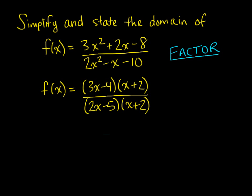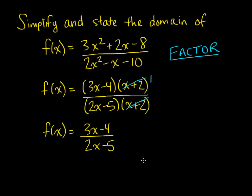Now this makes simplifying much easier because we can see a common factor in both the numerator and denominator. Taking (x plus 2) divided by (x plus 2) equals one, since it's a number divided by itself. So our function in simplified form is (3x minus 4) over (2x minus 5). We have simplified this, but we do want to state restrictions as well. We do not want 2x minus 5 to equal zero, which means x cannot equal five over two, or 2.5.